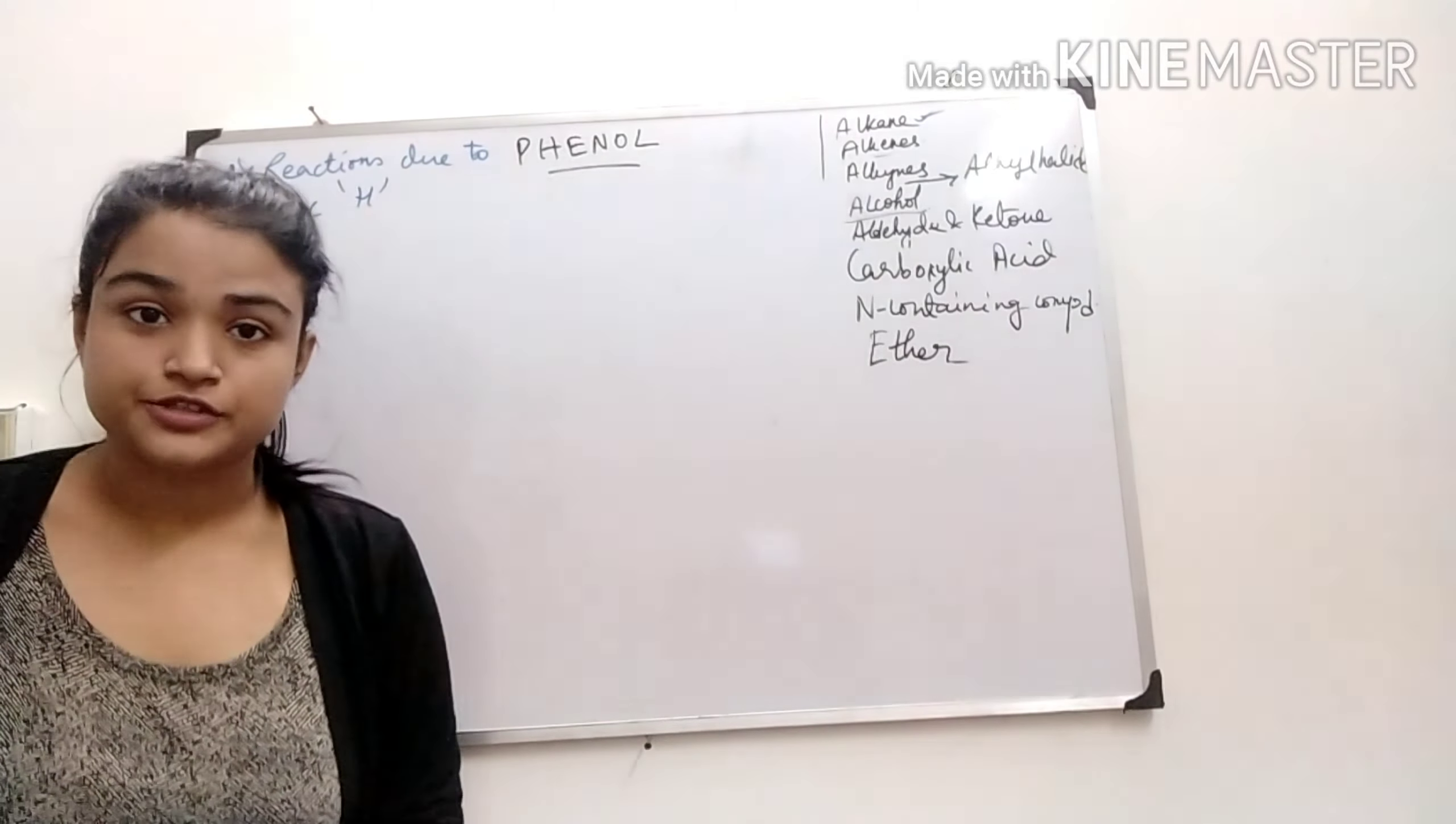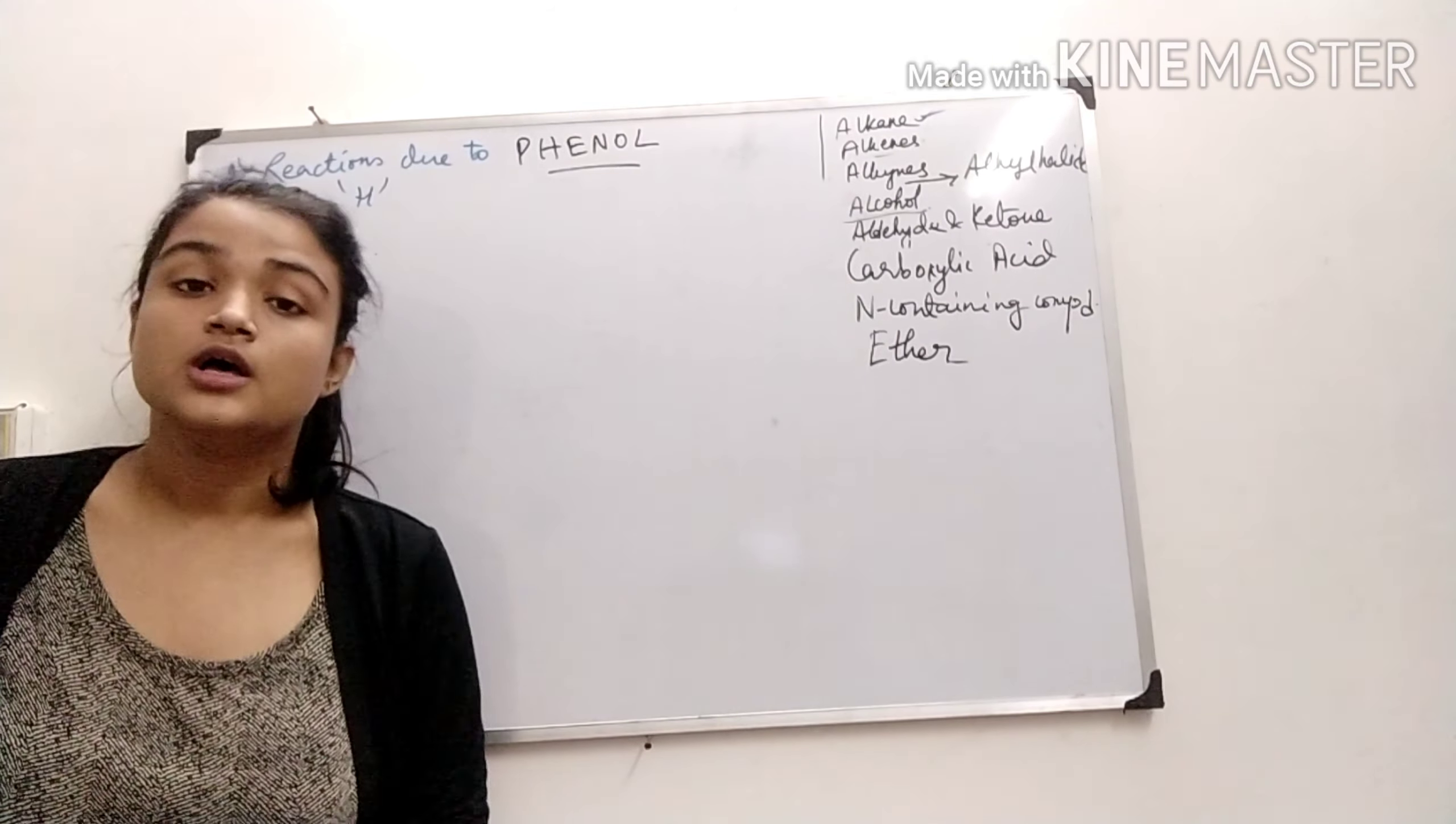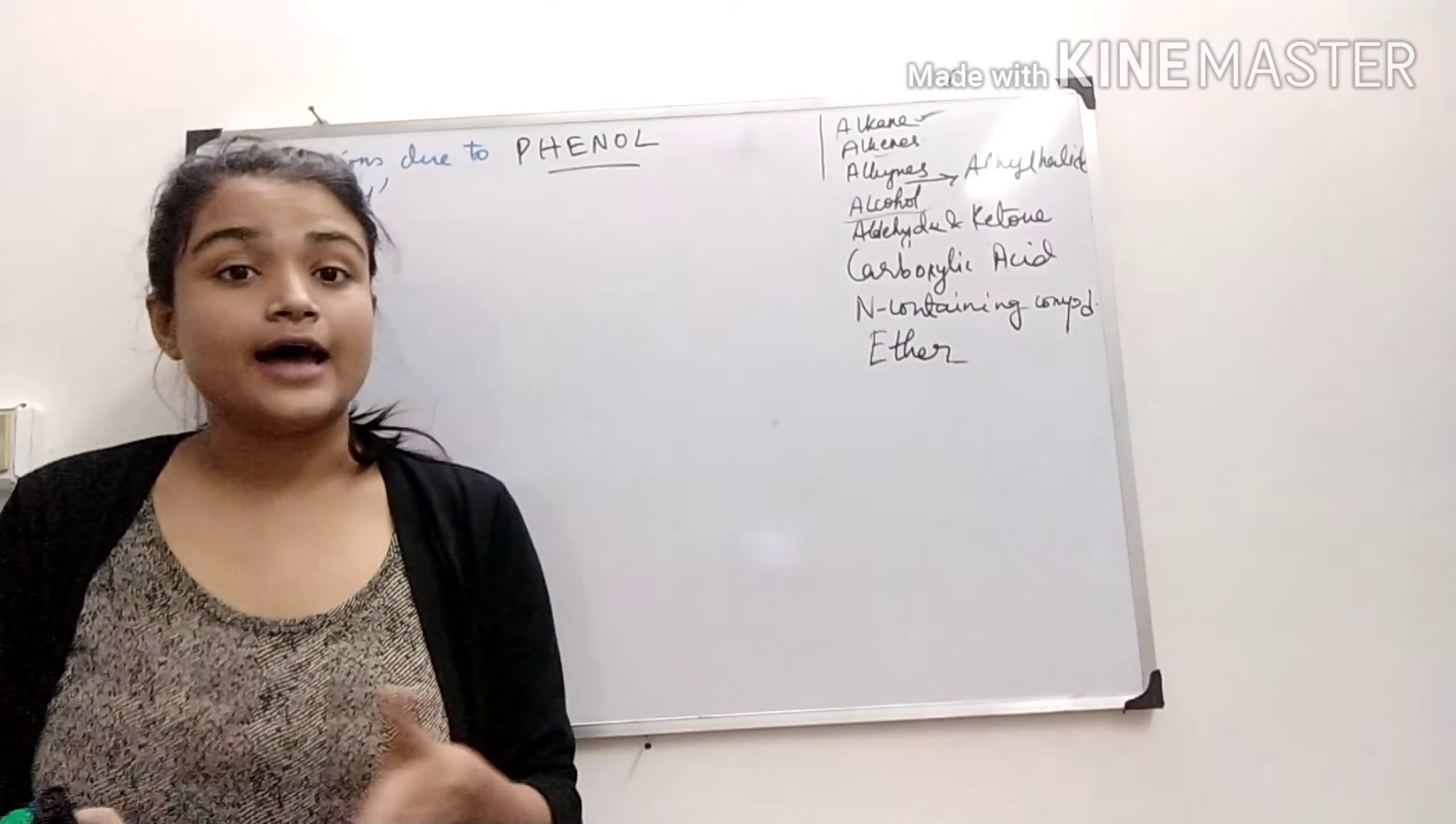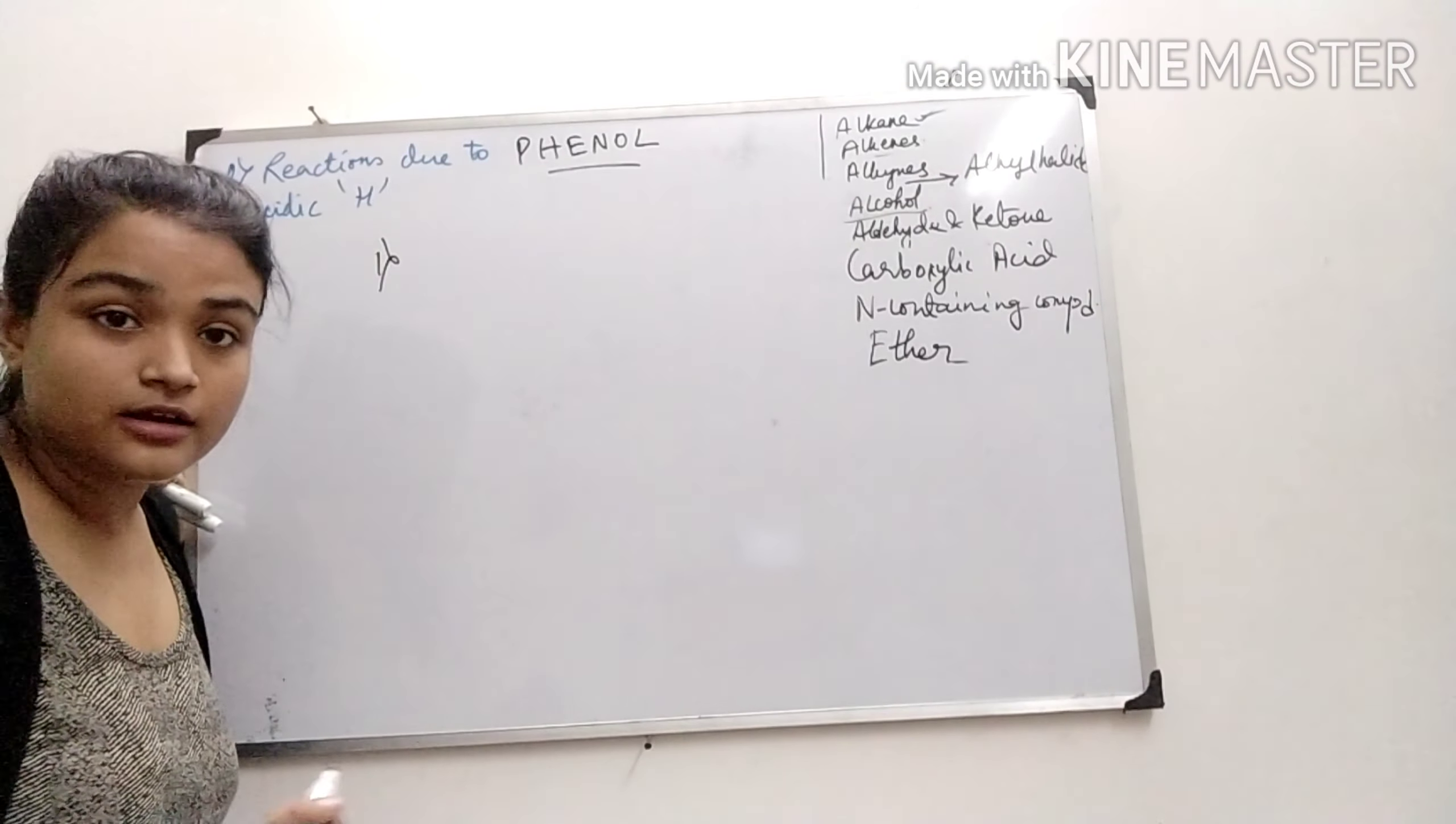Now we will see a few reactions which involve the acidic hydrogen and also a few other reactions which phenol generally undergoes. The first one will be the reaction between phenol and acetyl chloride. So let's see what happens when phenol is treated with acetyl chloride.